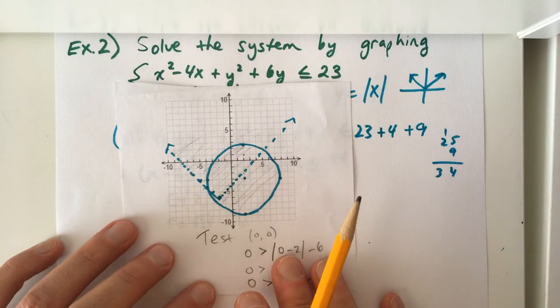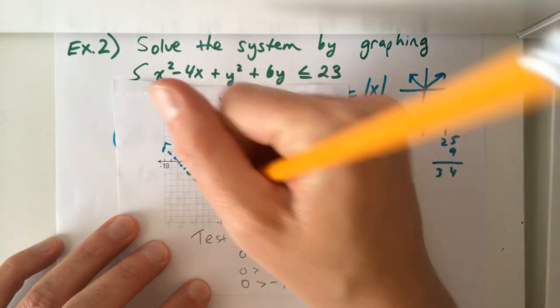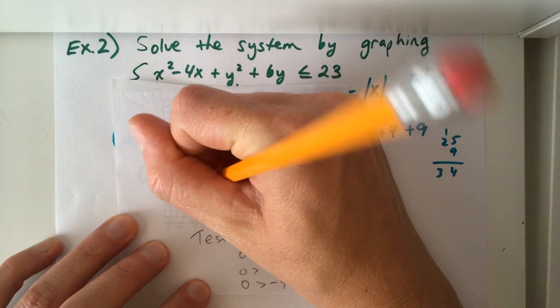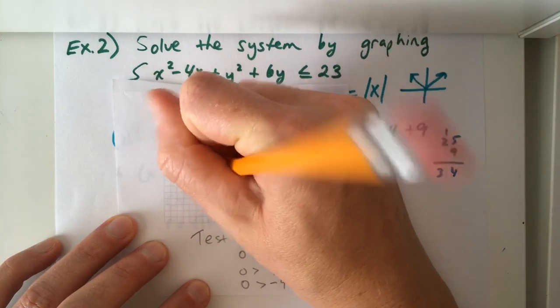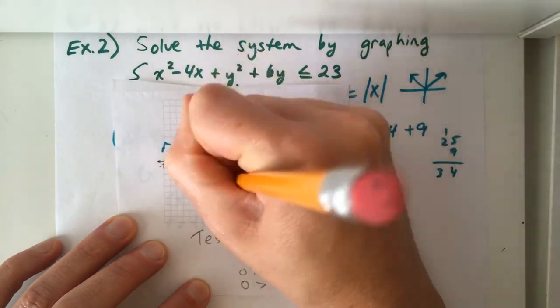And then remember that the solution to the system is where the two shaded regions overlap. And where the two shaded regions overlap is just this piece right here.